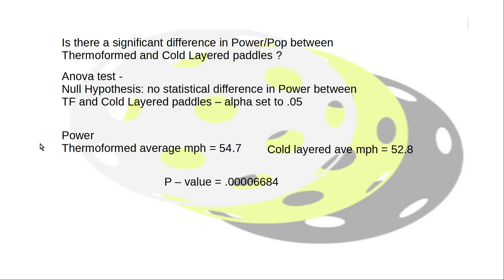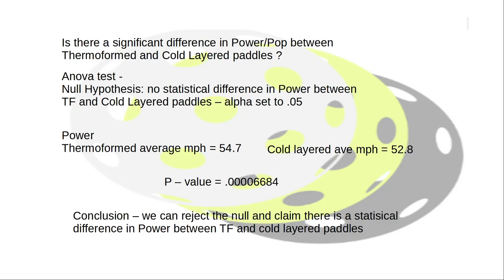So is there a statistical difference between power and pop? Well, we use analysis of variance, and the null hypothesis states there is no statistical difference in power between the two types of paddles. Alpha set to 0.05, which is pretty standard for analysis of variance. We're looking for a p-value of less than 0.05, and our averages for power don't seem different a lot. I mean, they just don't seem hugely different, but that's why we do the stats because the averages can only take you so far. Our p-value was definitely below 0.05, so we can conclude that there's a statistical difference in power between thermoformed and cold layer paddles.